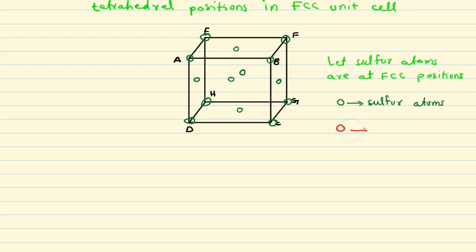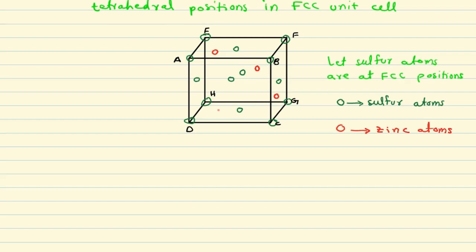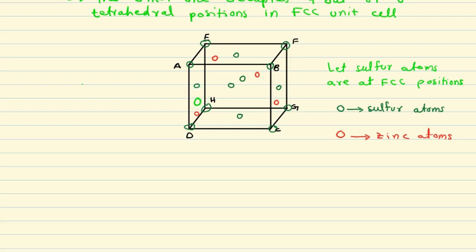Red indicates the zinc atoms. Zinc atoms are at the tetrahedral positions. For understanding tetrahedral positions in FCC, I will put the link of our previous video on this topic in the description. The zinc atoms are placed at the tetrahedral positions near corners E, B, G, and D.